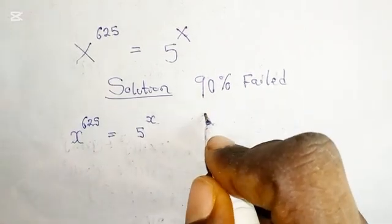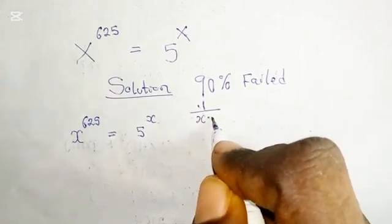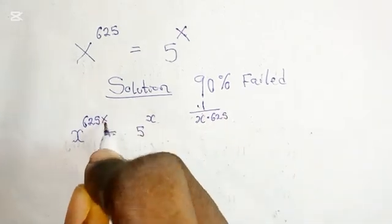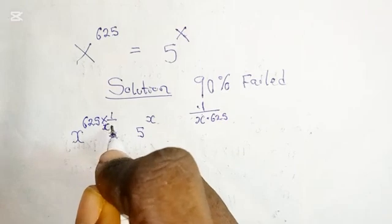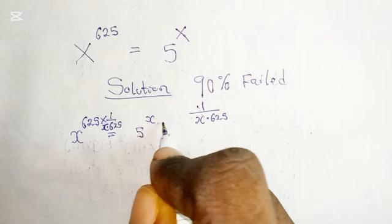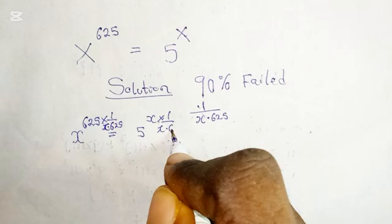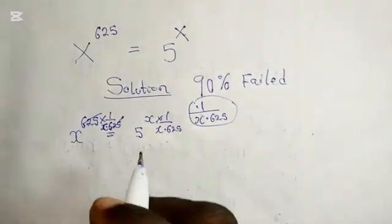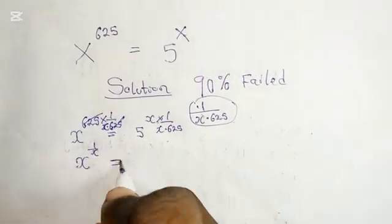We are going to multiply with 1 over x times 625. So here we multiply the power with 1 over x times 625, and also here by 1 over 625. Now this 625 will cancel out 625, and we are left with x raised to the power 1 over x.